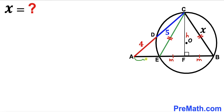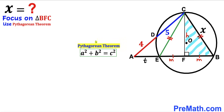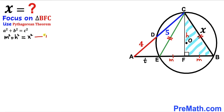Now let's focus on right triangle BFC and apply the Pythagorean theorem. The hypotenuse is x, and the two legs are m and h. Filling in the formula gives us m² + h² = x². We'll label this as Equation 1.